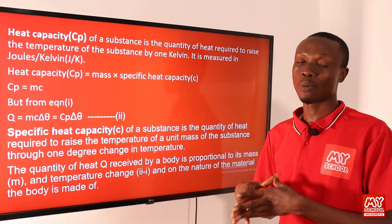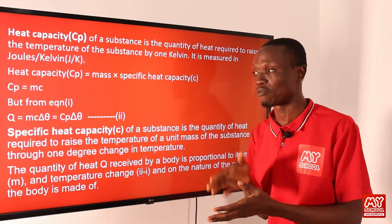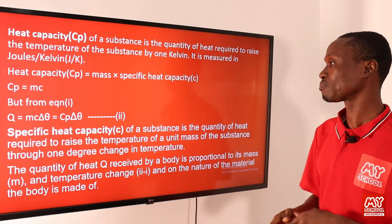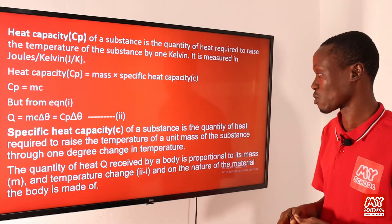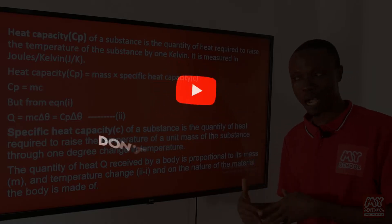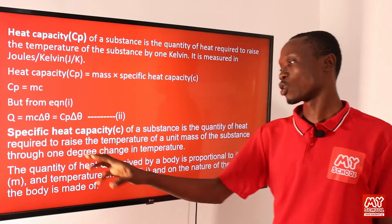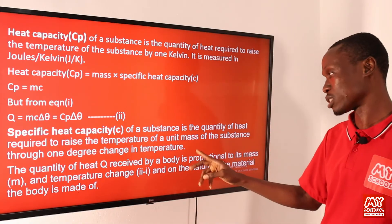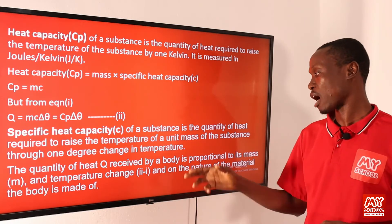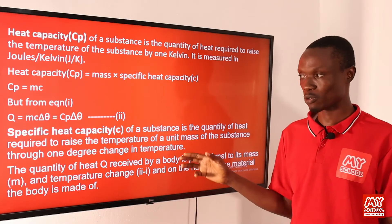Now let's talk about specific heat capacity. Heat capacity refers to the entire mass of a body, but specific heat capacity refers to a unit mass, say one kilogram. Specific heat capacity of a substance is the quantity of heat required to raise the temperature of a unit mass of the substance through one degree change in temperature. The quantity of heat Q received by a body is proportional to its mass m, temperature change, and the nature of the material.